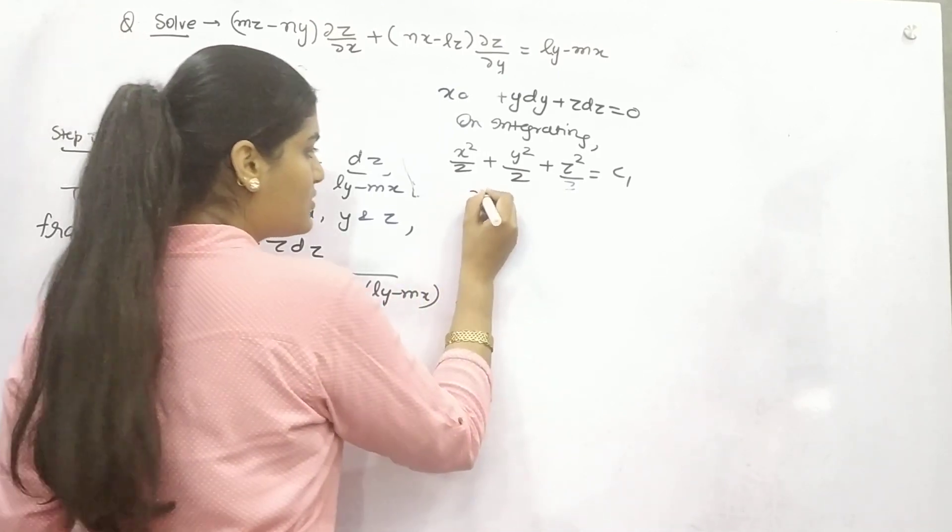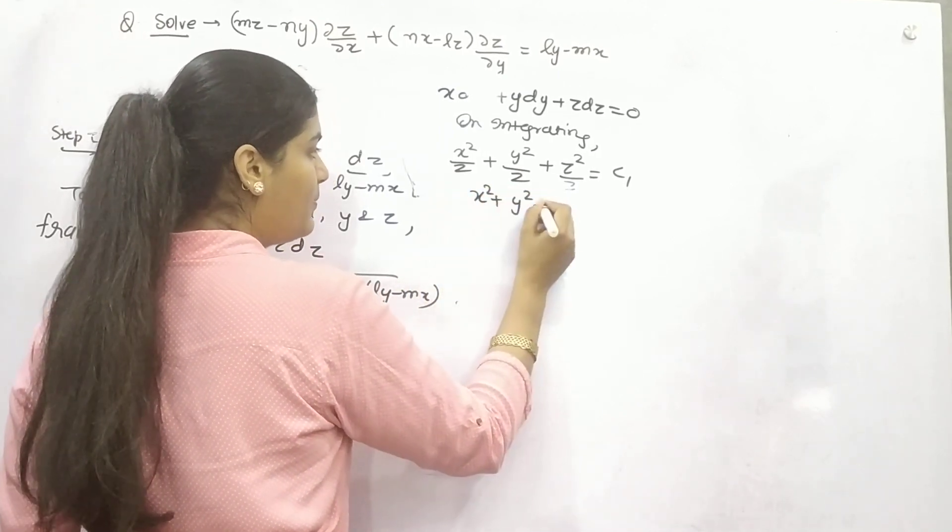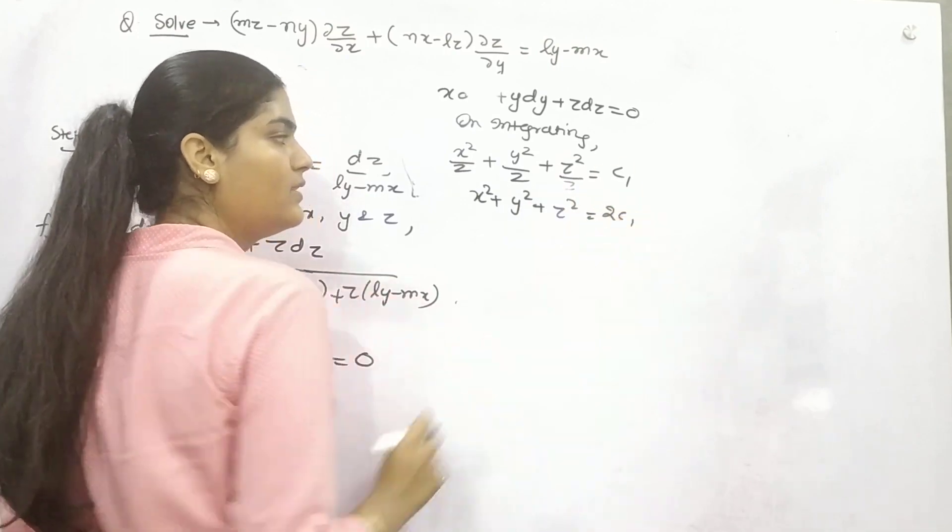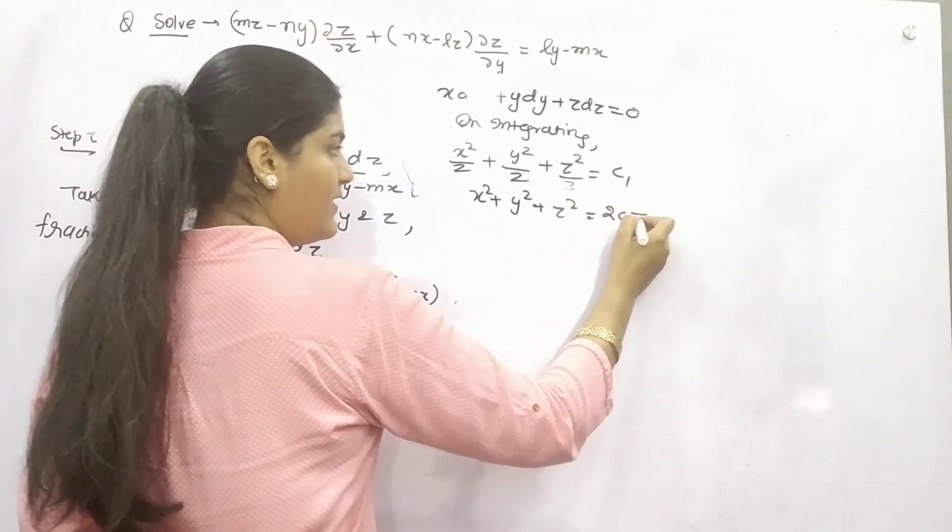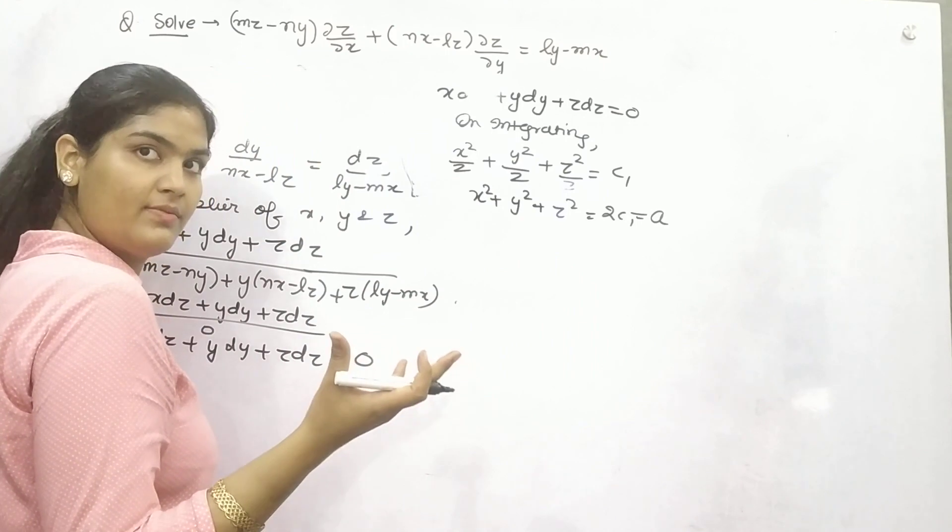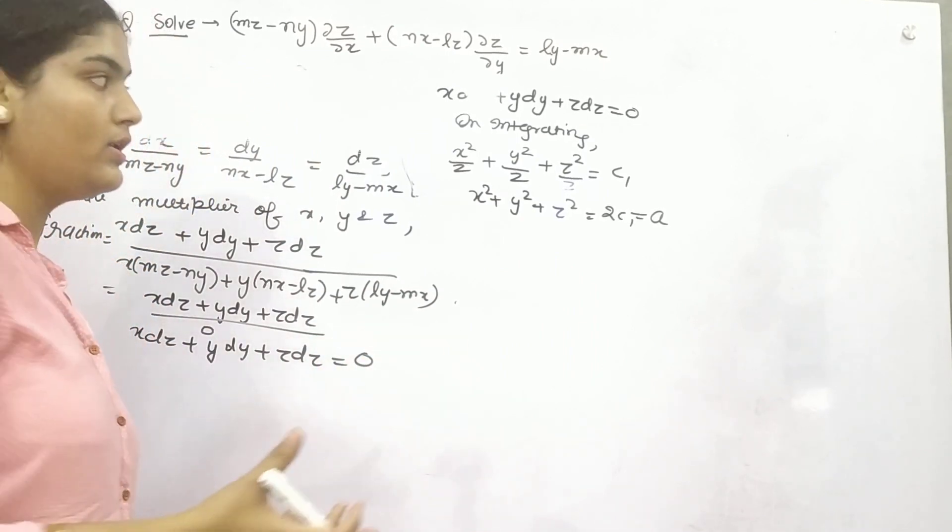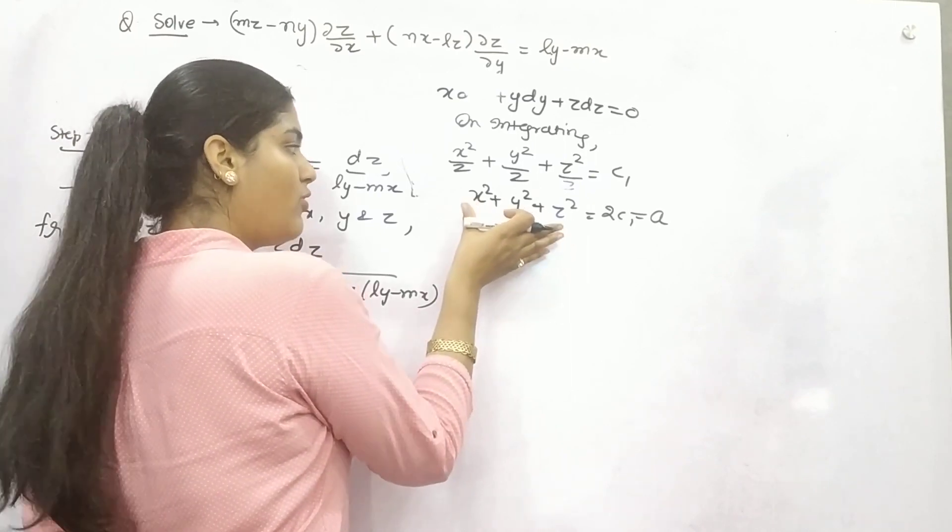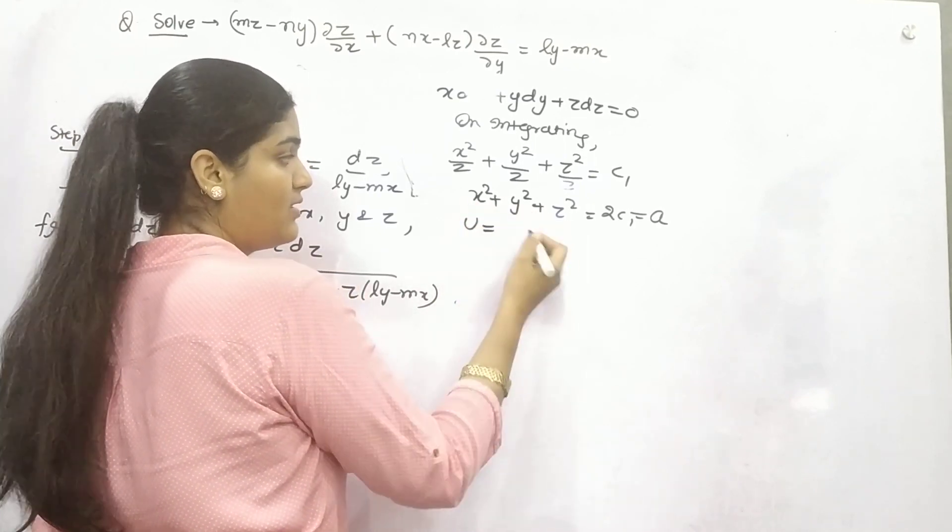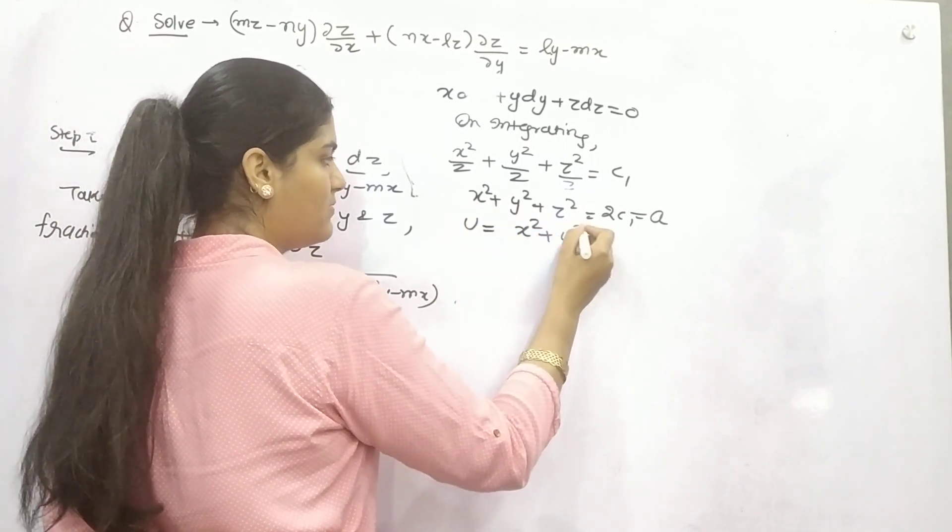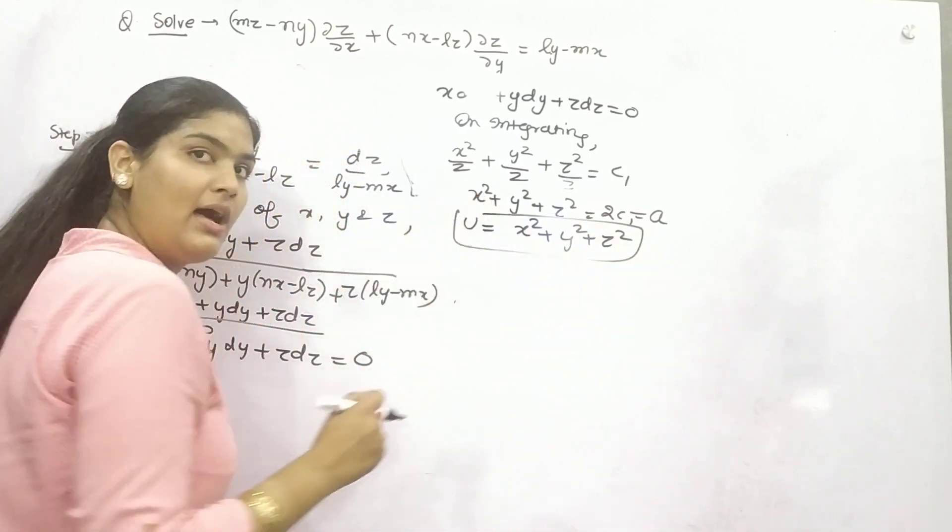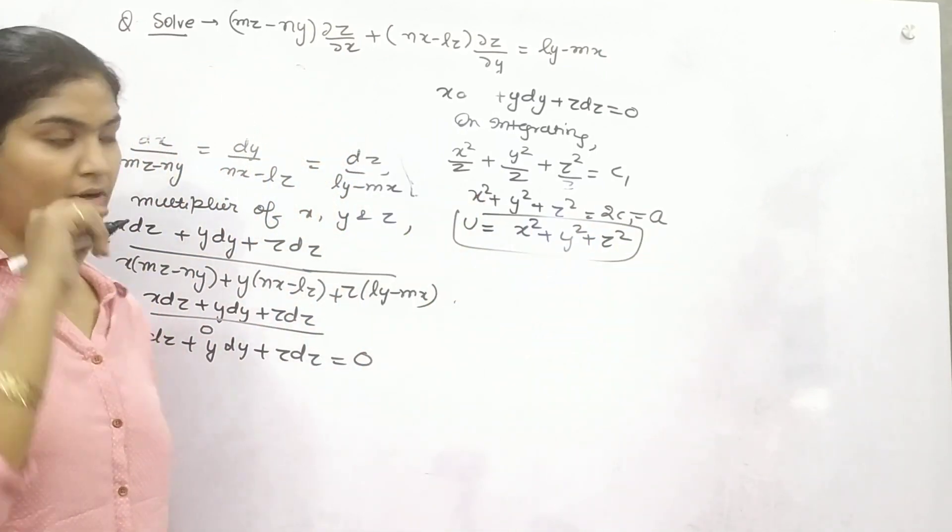Now your first function, which is in the form of U, is X² + Y² + Z². Now find out the second function. Get back to this form.